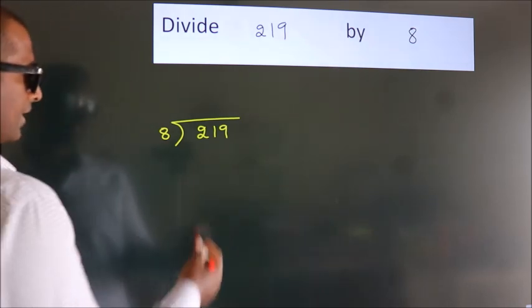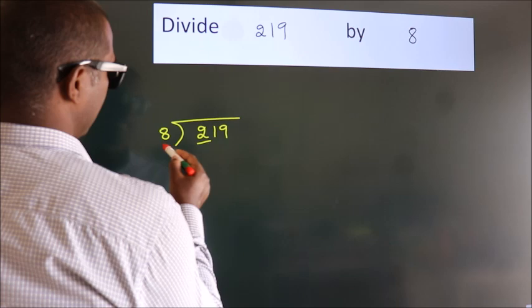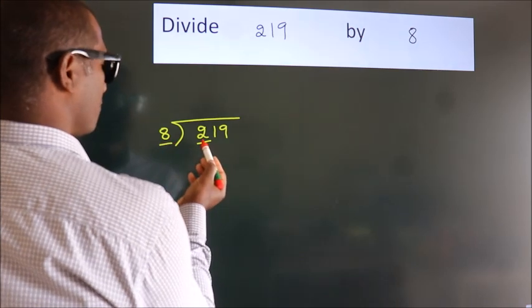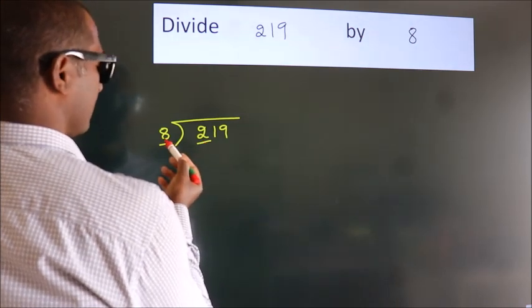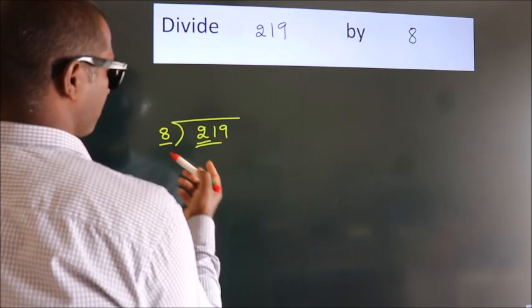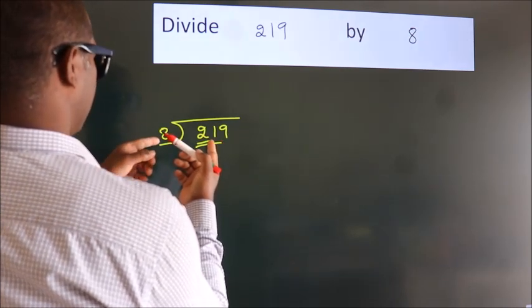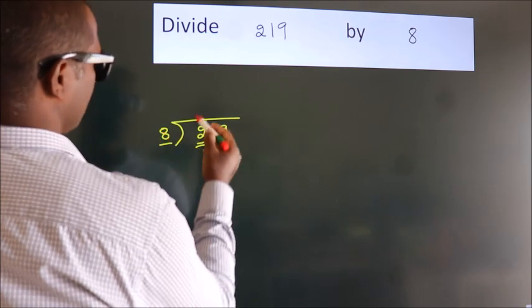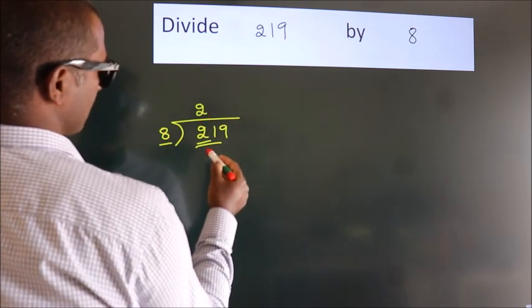Next, here we have 2. Here 8. 2 is smaller than 8, so we should take 2 numbers: 21. A number close to 21 in the 8 table is 8 times 2, 16.